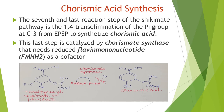Now we discuss chorismate synthesis. The seventh and last reaction step of the shikimate pathway is a 1,4-trans-elimination of the phosphate group at C3 from EPSP to synthesize chorismate. This last step is catalyzed by chorismate synthase, which requires reduced flavin mononucleotide (FMN) as a cofactor.